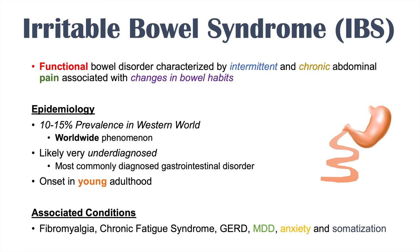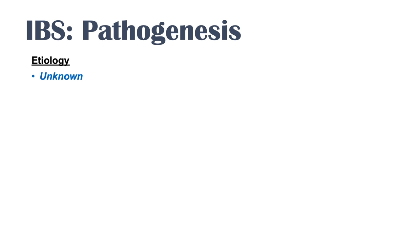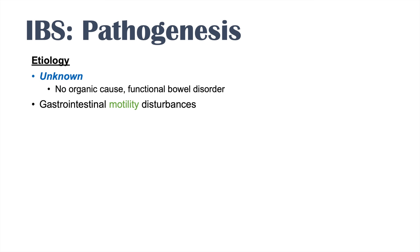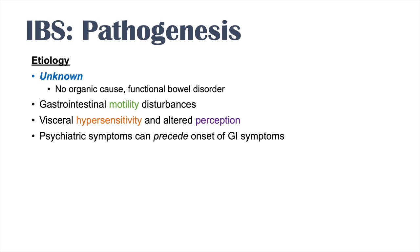The etiology of IBS is generally unknown. There is no organic cause for IBS, but it is considered a functional bowel disorder. We do know there are issues with gastrointestinal motility — disturbances in this process — and also visceral hypersensitivity and an altered perception of the gastrointestinal system. Interestingly, psychiatric symptoms such as major depressive disorder, anxiety, and somatization can actually precede the onset of GI symptoms.